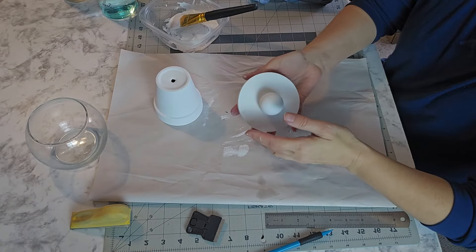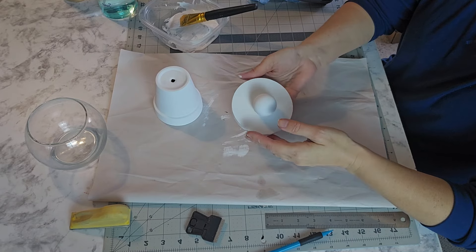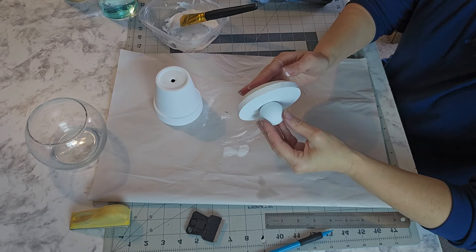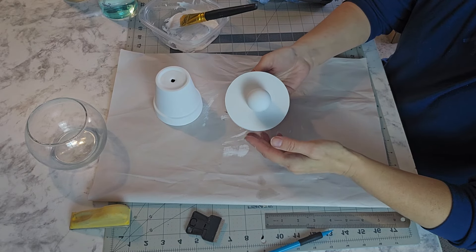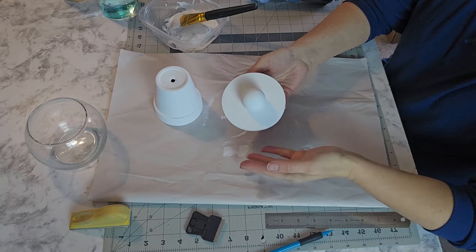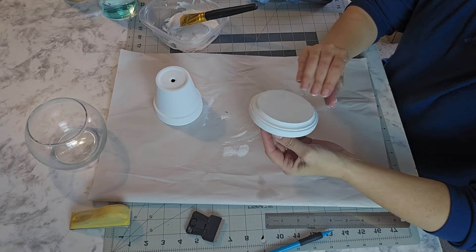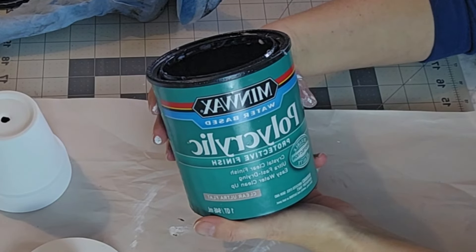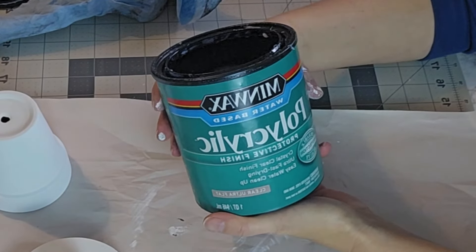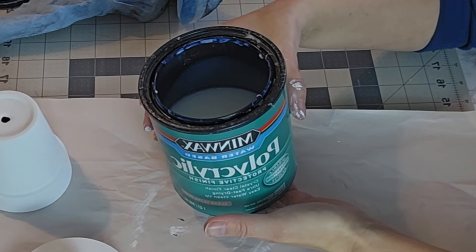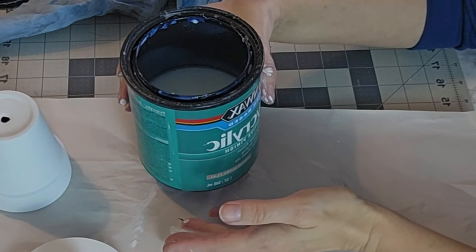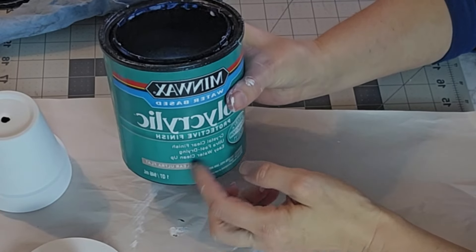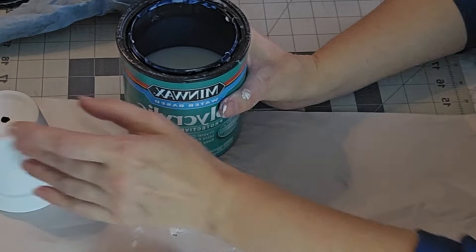And once this is all dry, since I'm using a chalk paint, I am going to go ahead and coat it with the clear coat just to keep it protected. I don't want it to scratch or flake off, and I'm going to make sure it's all dry good though. Okay, so for the clear coat I'm just going to use Minwax water-based polyacrylic protective finish. You can also use Mod Podge if you'd like. It's just up to you, whatever you've got on hand. But I've got this on hand and I like it a little better than the Mod Podge, so I'm going to put that on any piece that we painted.